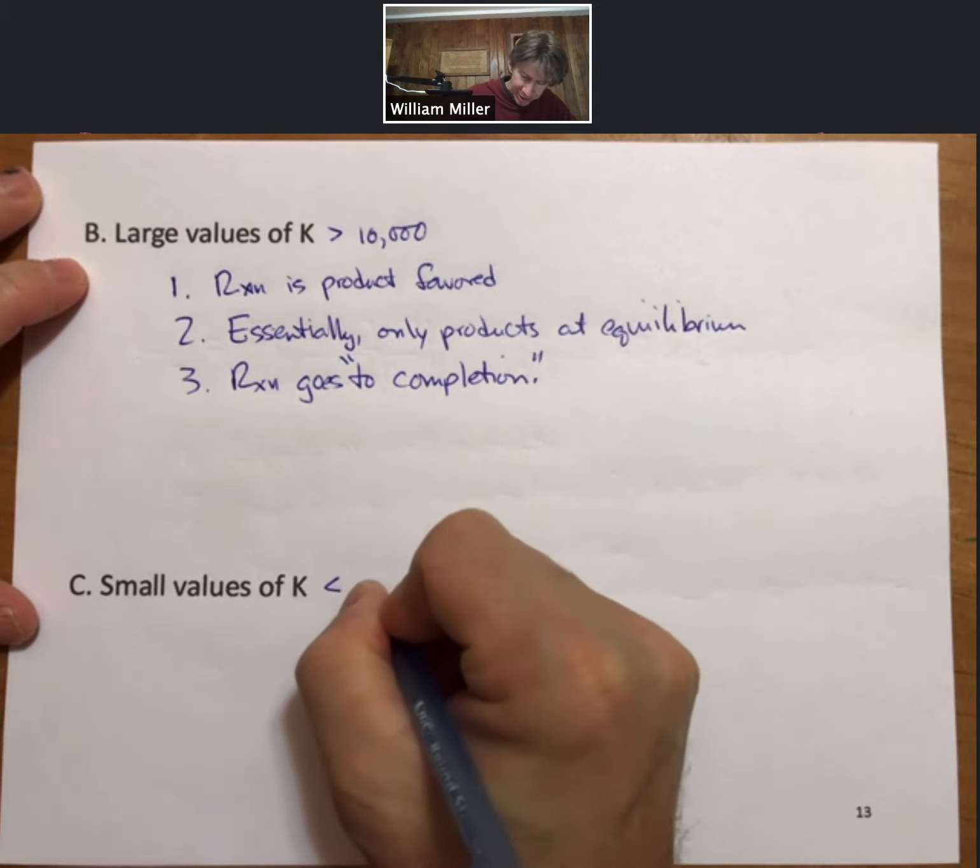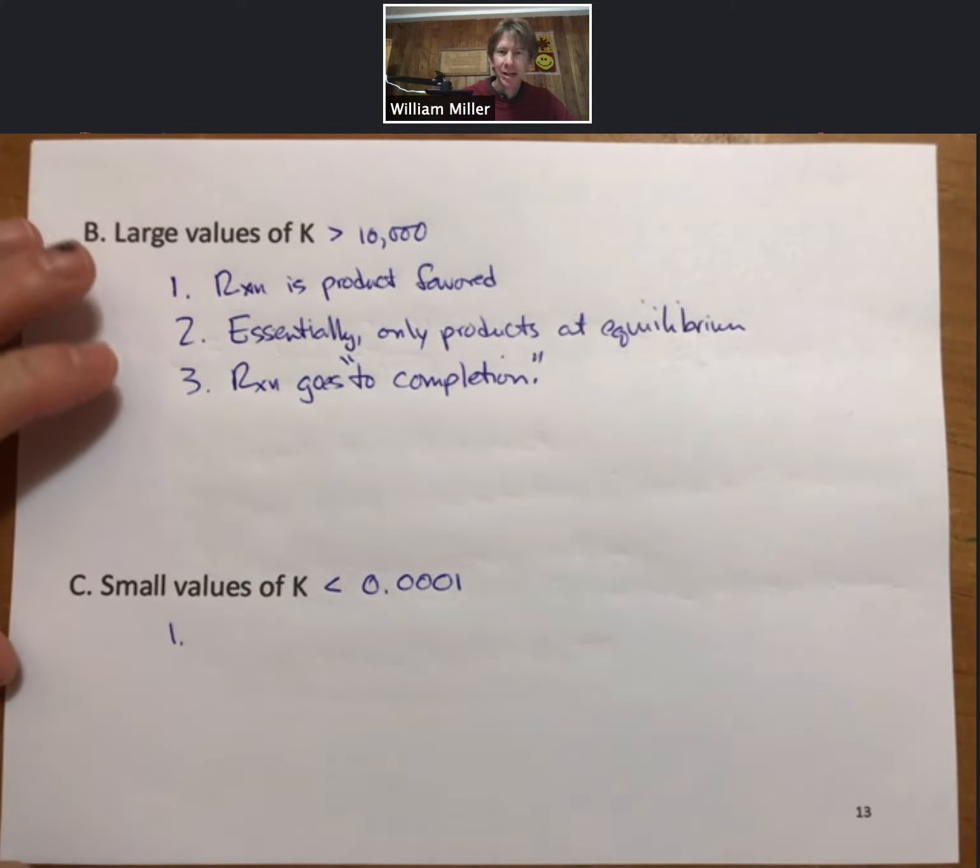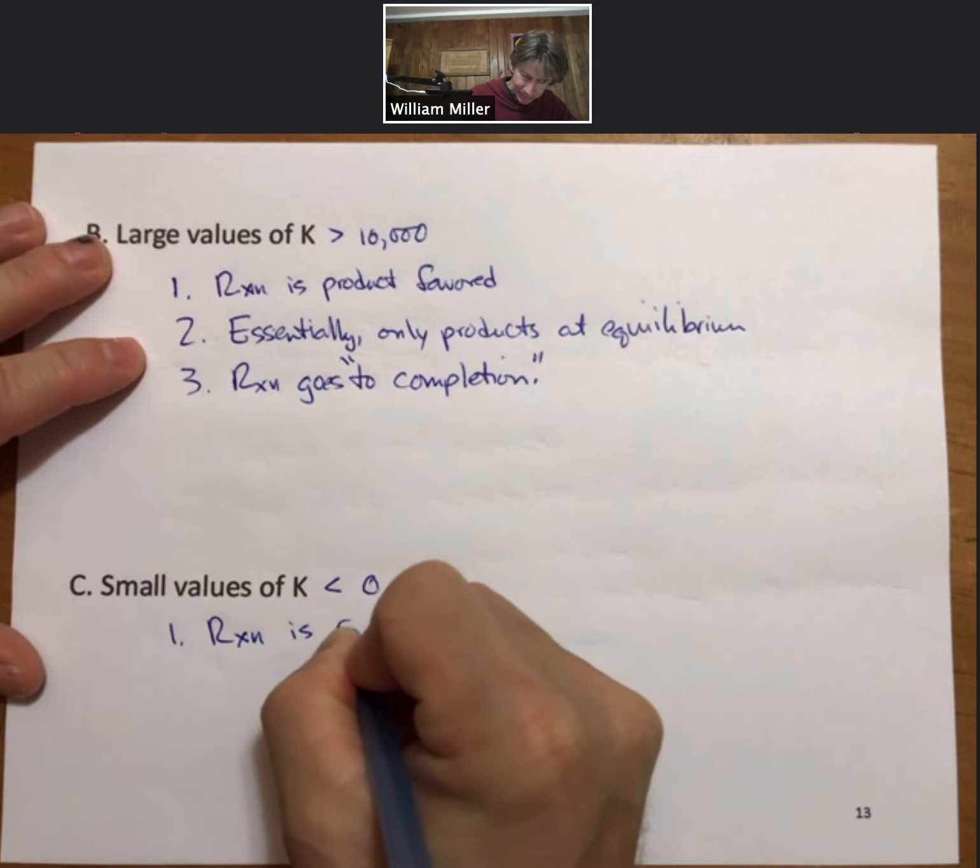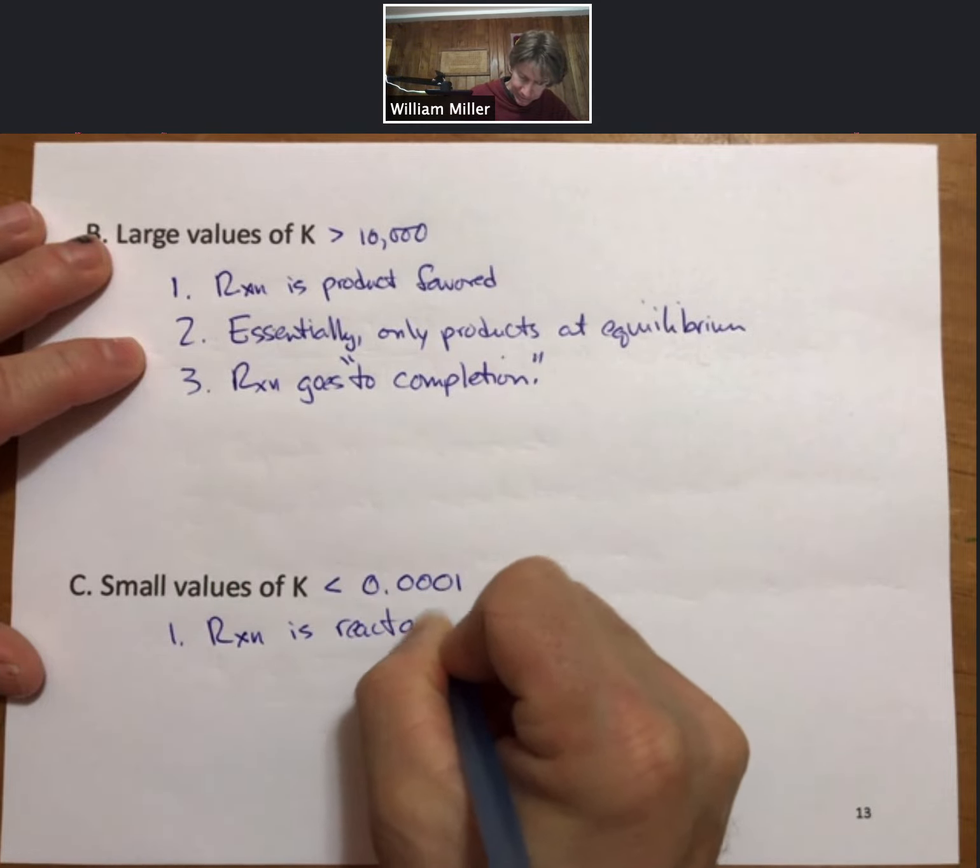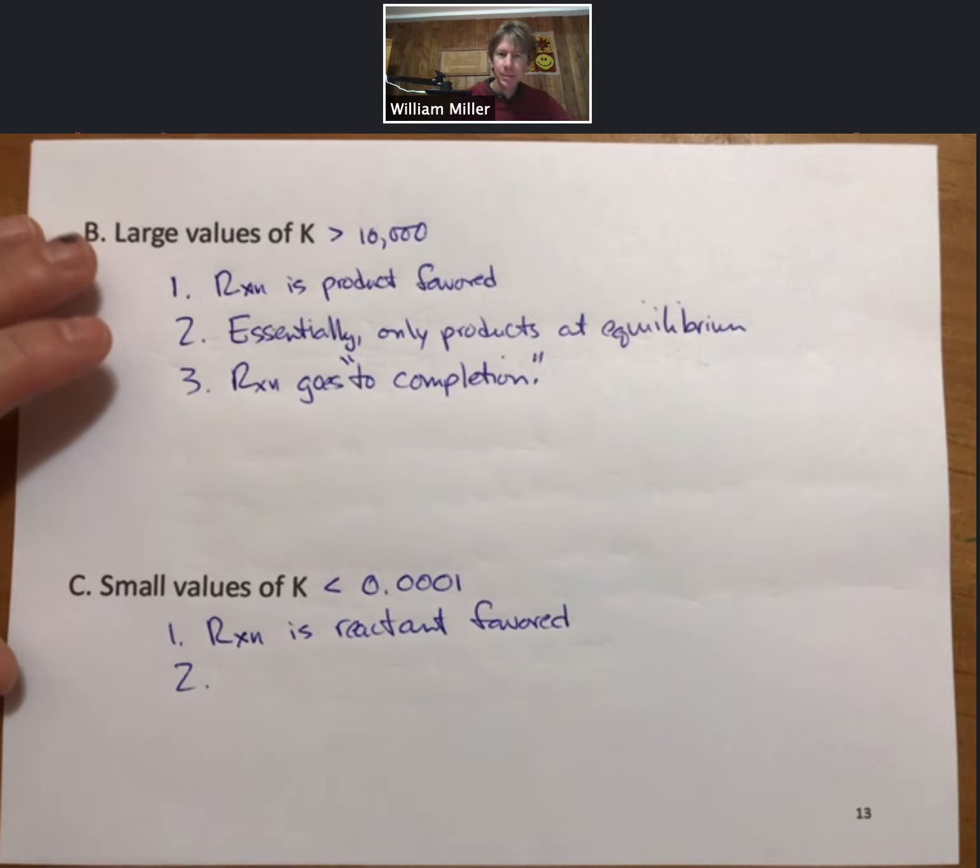Small values of K, zero less than one ten thousandth. The reaction is reactant favored. Essentially only reactants at equilibrium.